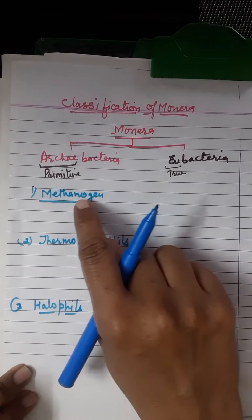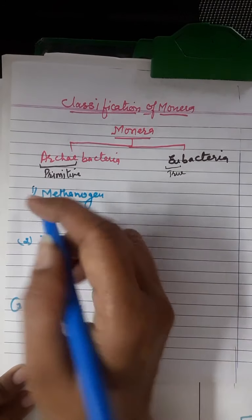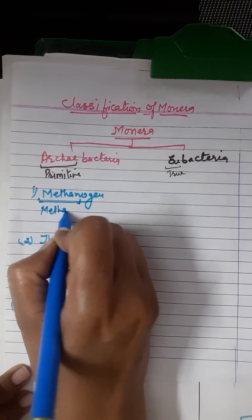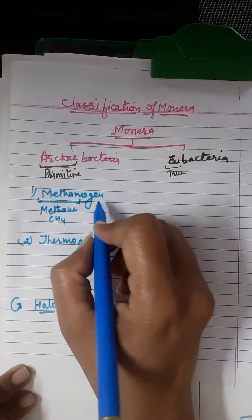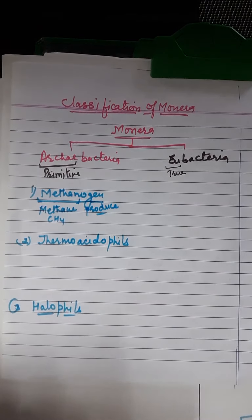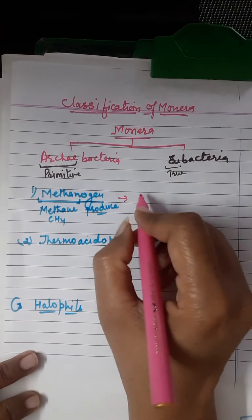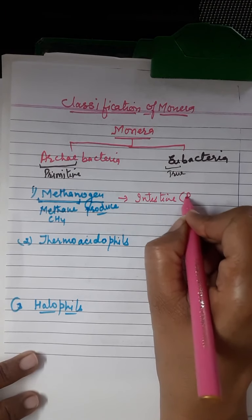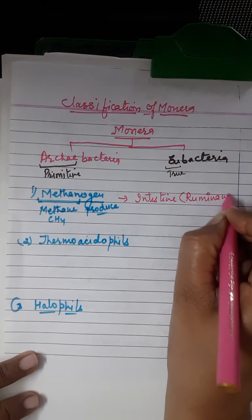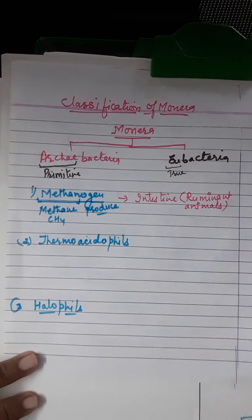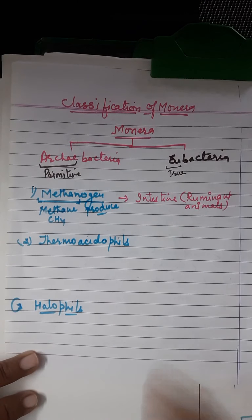Methanogens — as the name indicates — relate to methane, the gas CH4. Those bacteria which can produce methane are called methanogens. Methanogens are present in the intestine of ruminant animals, a term that may be new for some students but familiar to those who have studied for NEET.